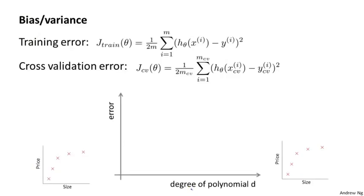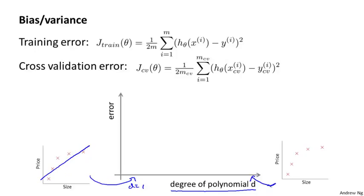Let's plot the following figure. On the horizontal axis, I'm going to plot the degree of polynomial. As I go to the right, I'm fitting higher and higher order polynomials. On the far left, where d equals one, I'm fitting very simple functions. Whereas on the far right, with much larger values of d, that corresponds to fitting much more complex functions to your training set. Let's look at the training error and the cross validation error and plot them on this figure.